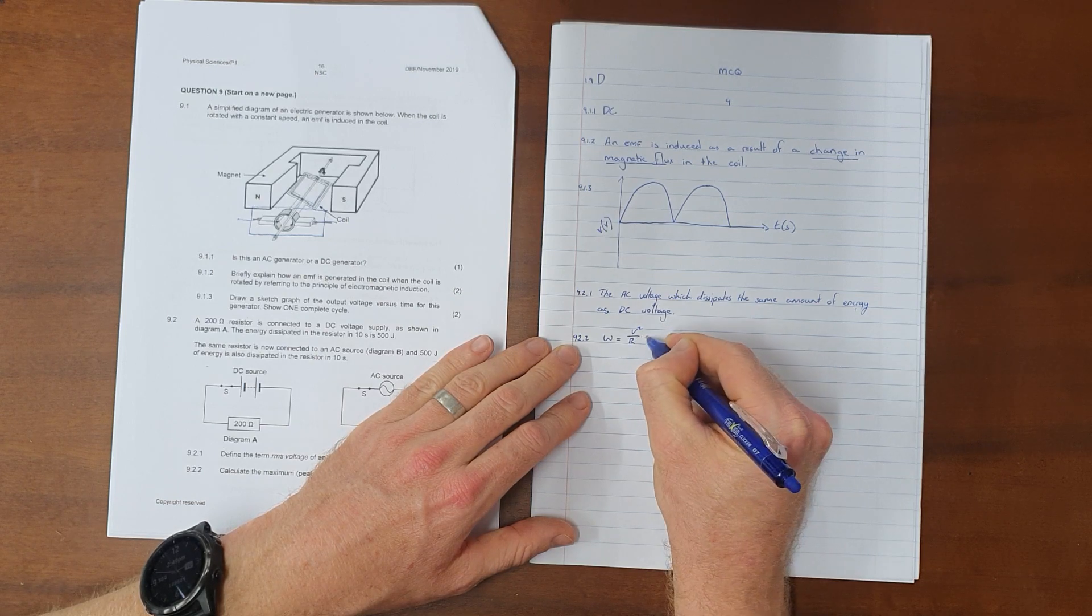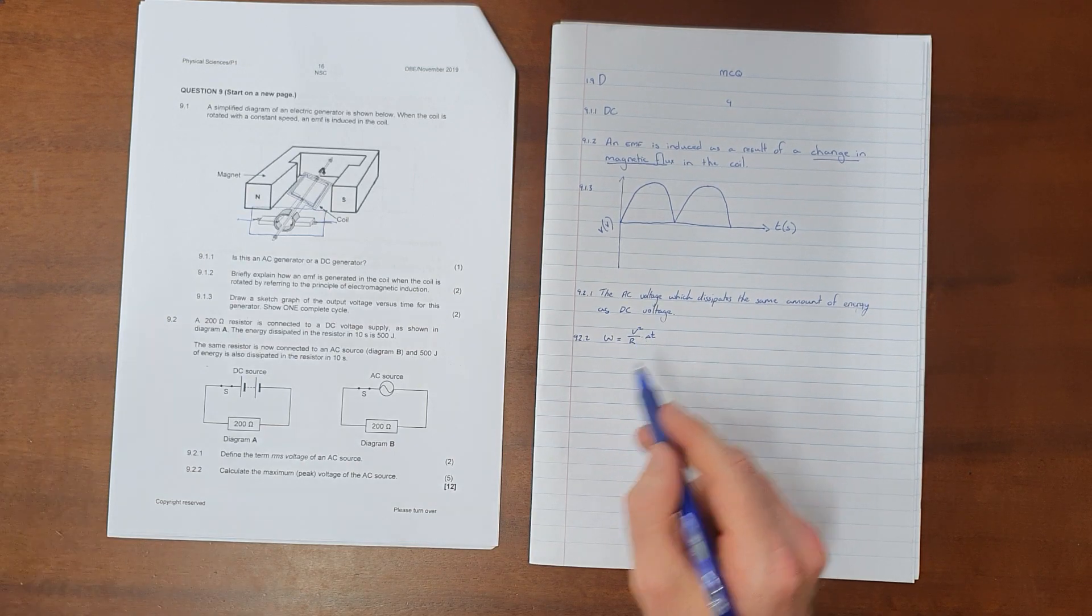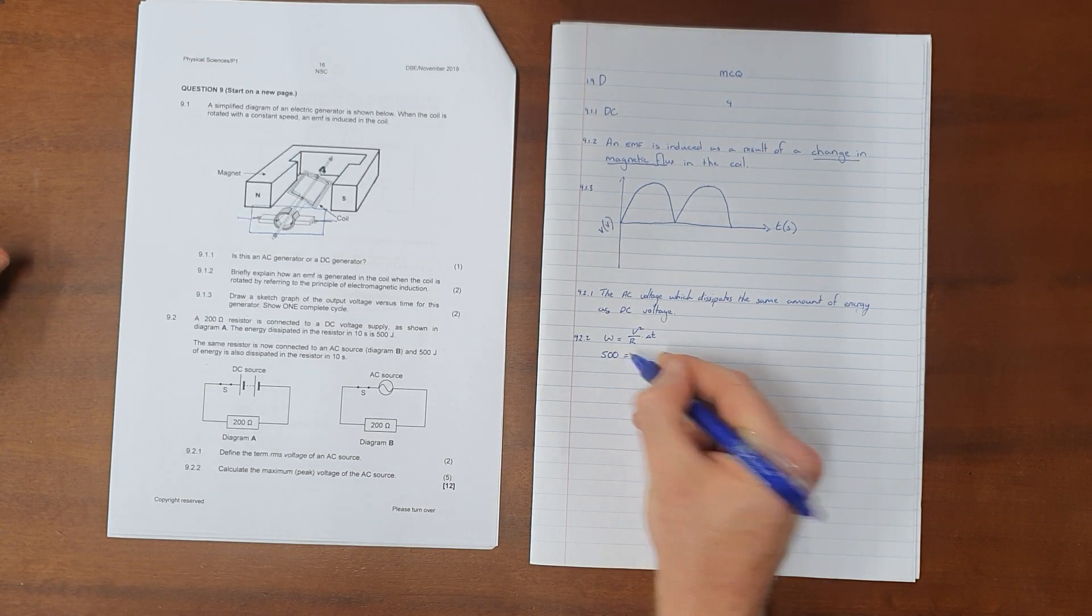the work done using the formula: work done equals V squared over R multiplied by the change in time. This will give us the RMS voltage because we've been told these two powers are equivalent. The work done is given as 500 joules, the voltage is our unknown, the resistance is 200 ohms, and the time is